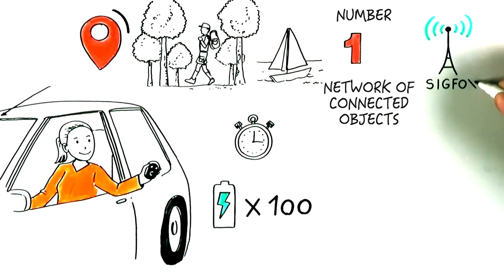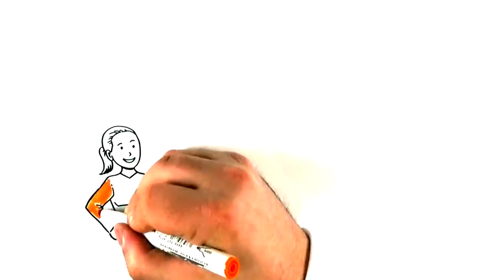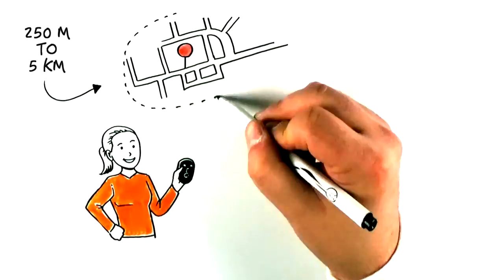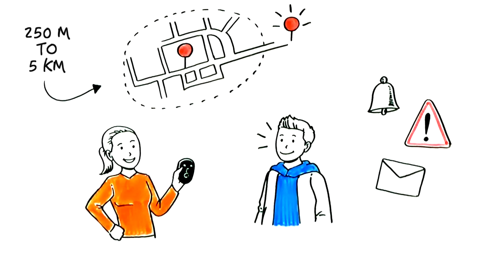It doesn't use the usual frequencies or even a SIM card. As soon as the scooter left a certain defined perimeter, Frank could have been warned immediately. Super handy to protect your belongings.